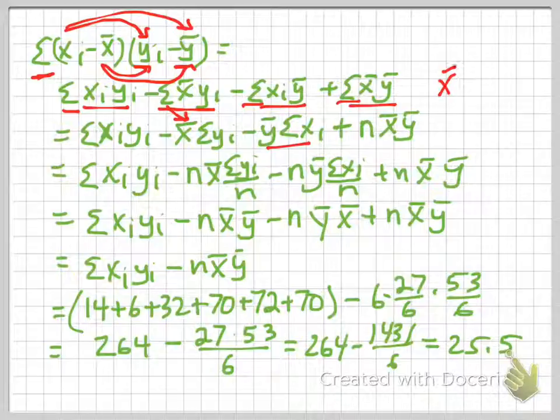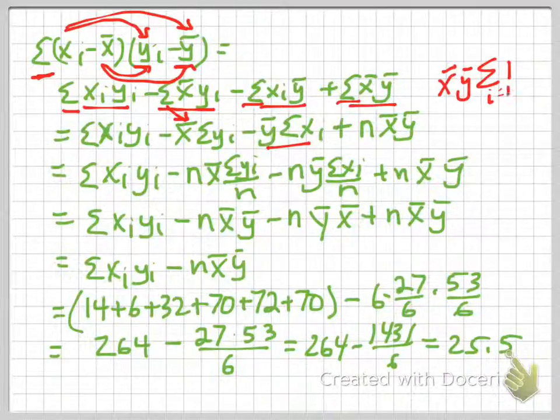So in some sense, we have x-bar y-bar summation of 1 from i equals 1 to n. So that's just 1 n times, and that's n. So that's why we can multiply it by n here.